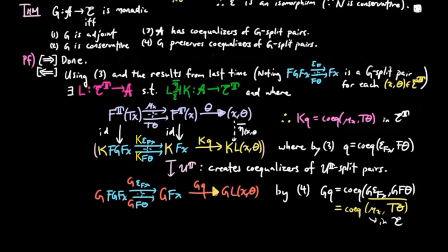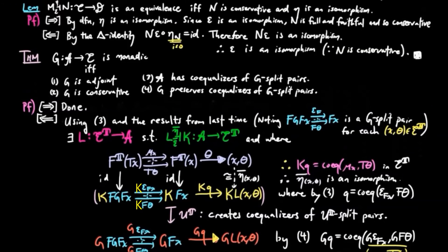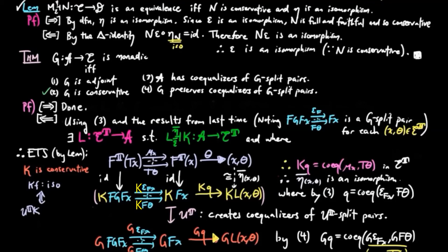Since KL(X, theta) and (X, theta) share the same universal mapping property, it follows that the unit eta-bar is an isomorphism. So in order to prove that K is an equivalence, by the lemma above, it is enough to show K is conservative. We have KF is an isomorphism if and only if UTKF is an isomorphism, since UT is conservative. And UTKF is an isomorphism if and only if F is an isomorphism, since G equals UTK and is by assumption conservative by condition 2.